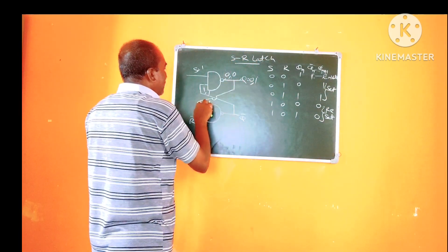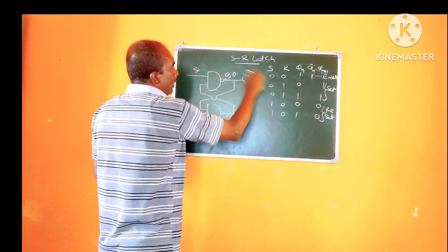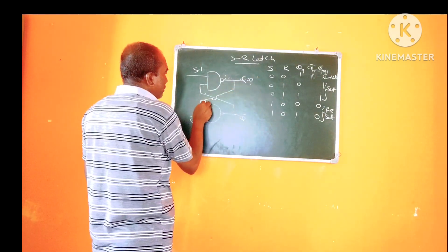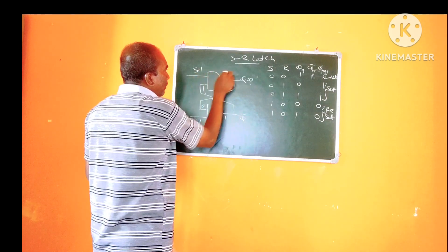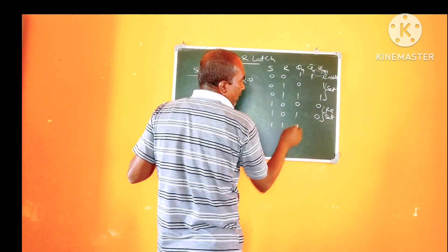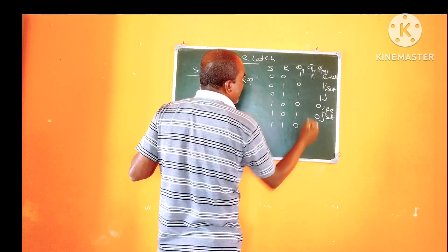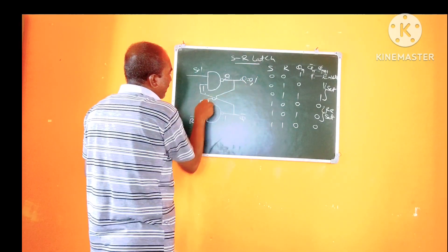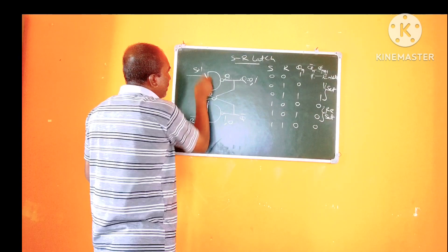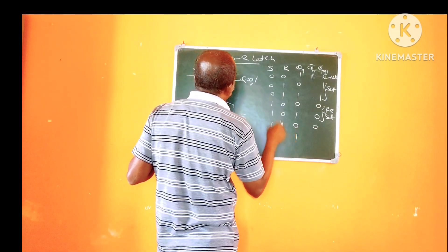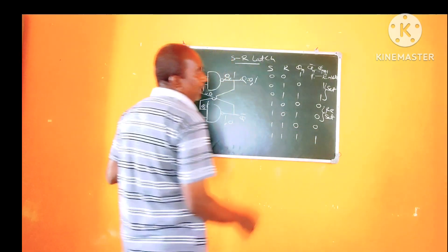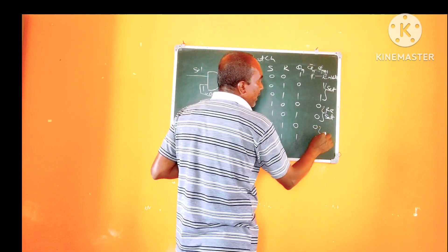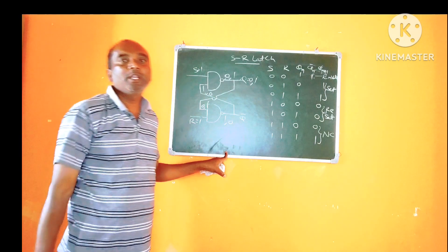Consider the other combination: S=1 and R=1. If the present state is 0, the gate logic gives next state 0. If the present state is 1, the gate logic gives next state 1. Whatever value we assume, we are getting the same value back — the next state equals the present state. Hence, it is the no-change state.